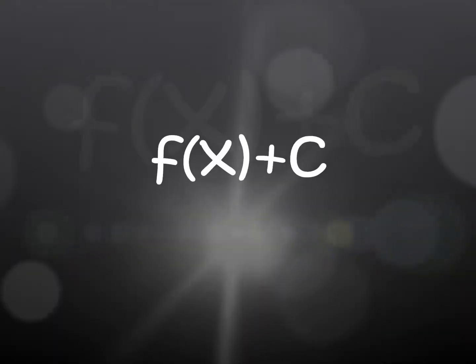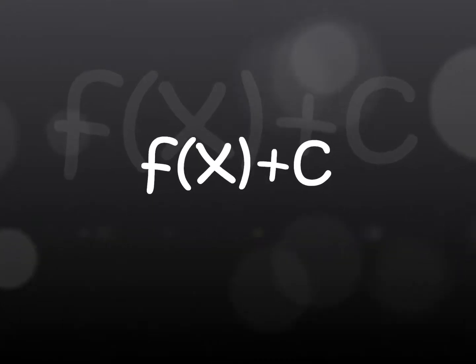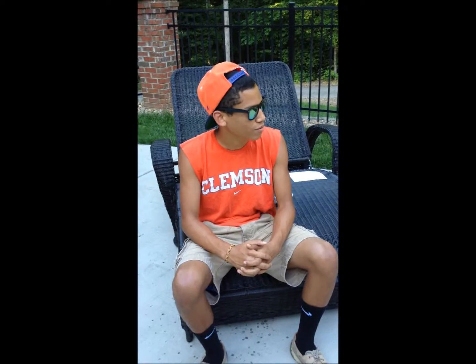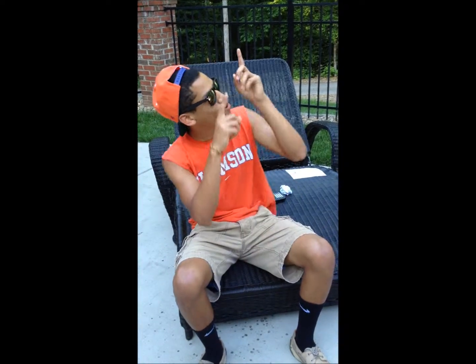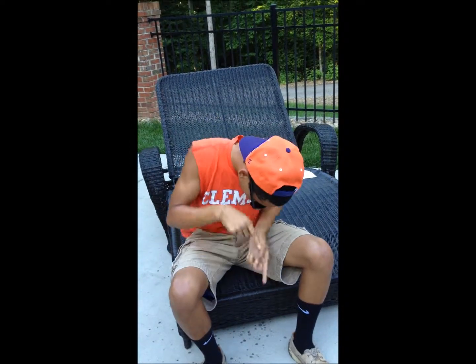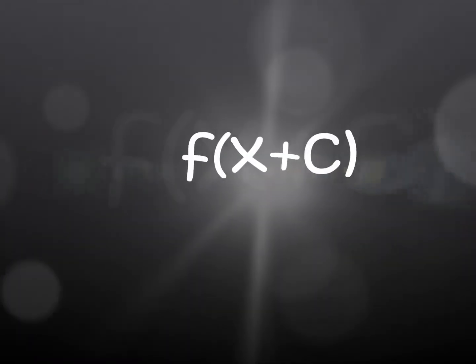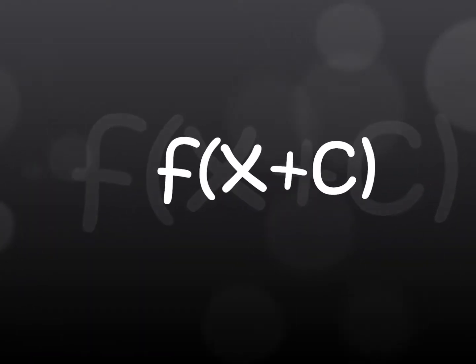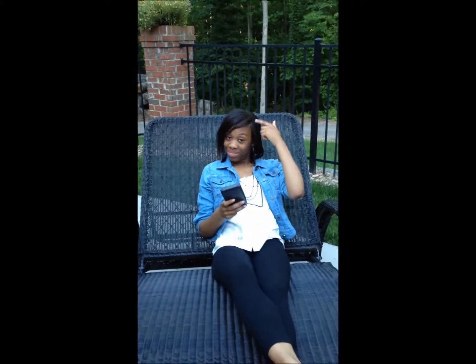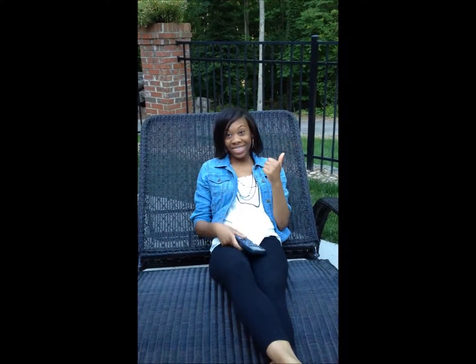F of x with a closed parenthesis — after that, you add a unit c. Move up when c is positive and down when c is negative. Then you have f of x plus c with the c inside the parenthesis. It's opposite of what you think inside. Positive is left. Negative is right.